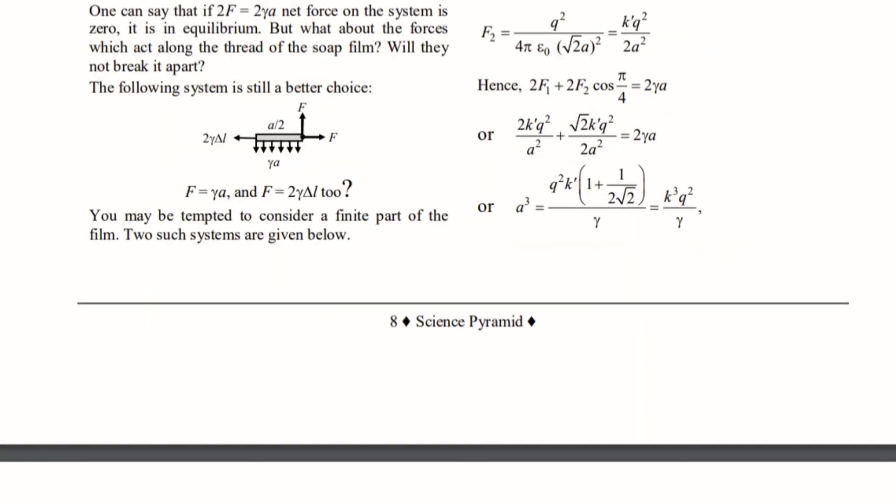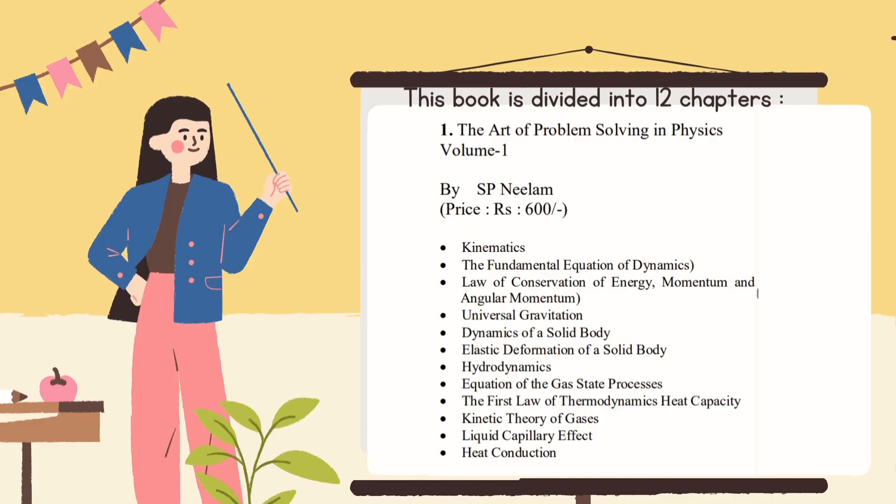The chapters covered in The Art of Problem Solving in Physics Volume 1 are: Kinematics, The Fundamental Equation of Dynamics, Law of Conservation of Energy, Momentum and Angular Momentum, Universal Gravitation, Dynamics of a Solid Body, Elastic Deformation of a Solid Body, Hydrodynamics, Equation of the Gas State Processes, The First Law of Thermodynamics, Heat Capacity, Kinetic Theory of Gases, Liquid Capillary Effect, and Heat Conduction.